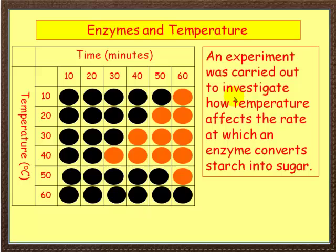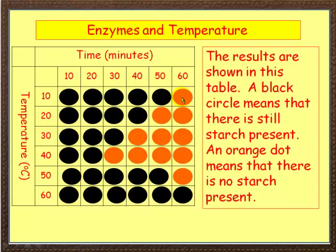Let's look at the effect of temperature on enzymes. Here we've got a little experiment to investigate how temperature affects the rate at which an enzyme converts starch into sugar. Along the bottom we've got temperatures: 10, 20, 30, 40, 50, 60 degrees, and along the side is time. Where it is black it means there's still starch present; where it is yellow it means all the starch has been broken down. At 10 degrees Celsius, at 50 minutes there's still starch present. Whereas at 40 degrees Celsius, by 30 minutes there's no starch present at all.